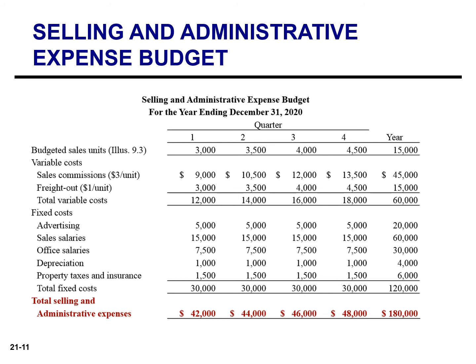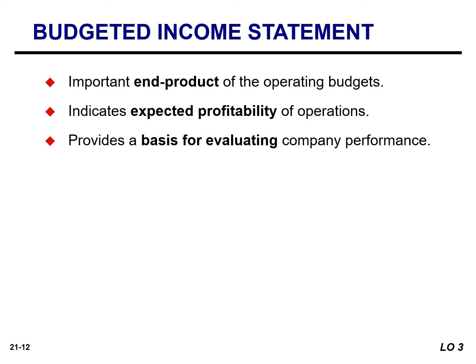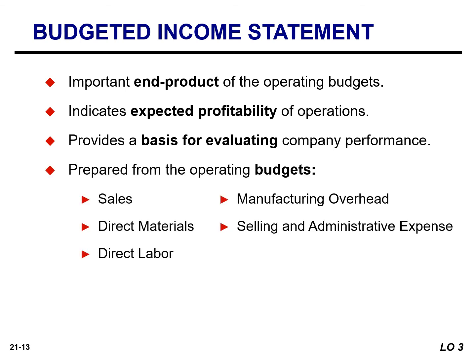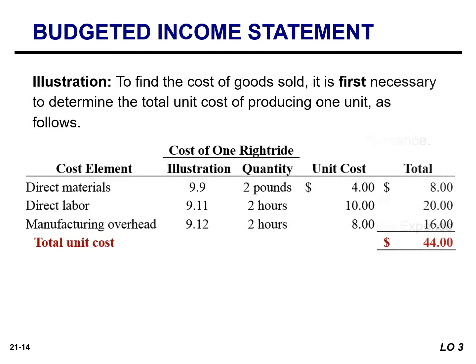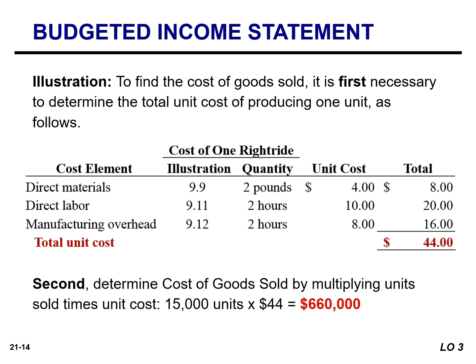You will need the selling and administrative expenses when you prepare the income statement. The budgeted income statement is the important end product of the operating budgets. This budget indicates the expected profitability of operations for the budget period and provides the basis for evaluating company performance. The budgeted income statement is prepared from the various operating budgets. To find the cost of goods sold, Hayes Company must first determine the total unit cost of producing one unit. Hayes then determines cost of goods sold by multiplying the units sold by the unit cost. Its budgeted cost of goods sold is $660,000, which is found by taking 15,000 units and multiplying by the total unit cost of $44.